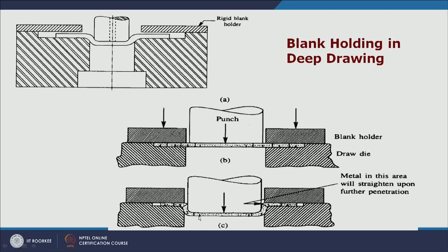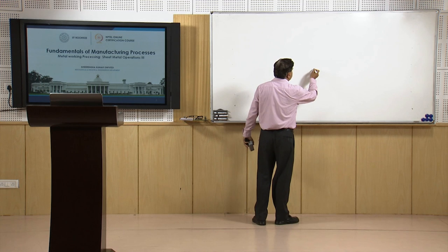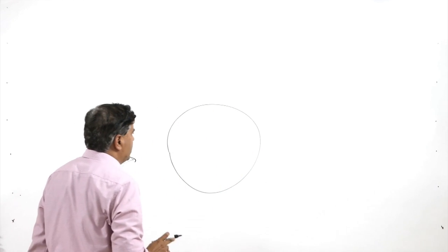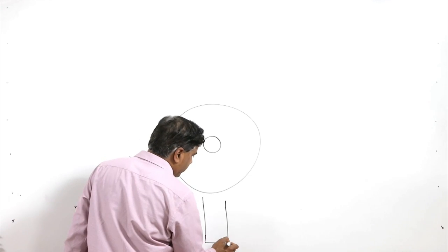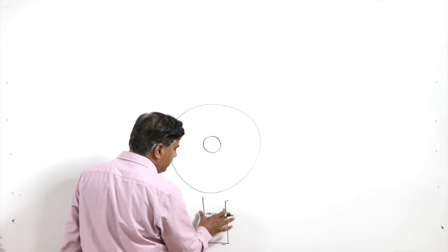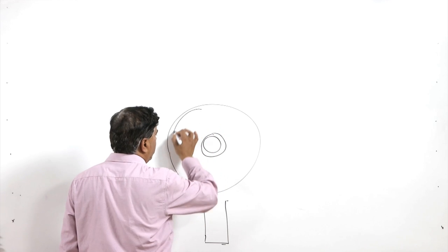When force is applied through the punch, the sheet metal starts moving down. The metal in this area is subjected to bending and thereafter straightening. As the punch keeps moving down, the material is straightened and subjected to bending; a little bit of thinning can also take place, though thinning is not significant in the drawing process. The sheet metal of larger diameter is used and the punch is applied, finally taking the cup shape. From the bottom to the top of the cup, the diameter is the same and it is cylindrical, but the material involved is less at the bottom and more at the top.